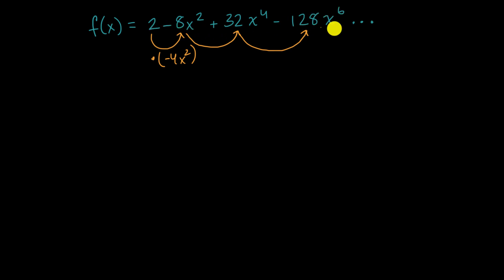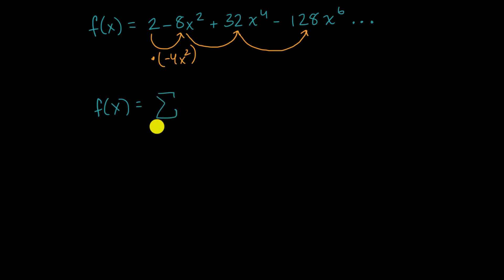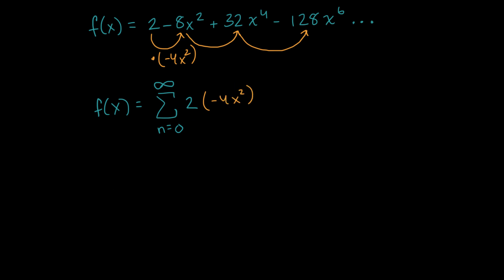This is indeed an infinite geometric series on the right-hand side. We can rewrite f of x as the sum from n equals zero to infinity of two times negative four x squared to the nth power — two is the first term and negative four x squared is the common ratio. When n equals zero, this equals two times one, which is two — our first term.